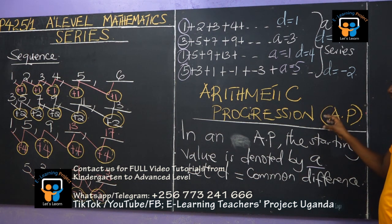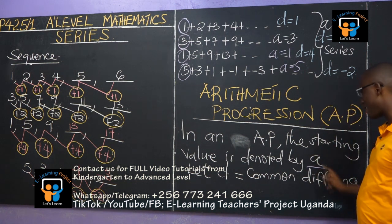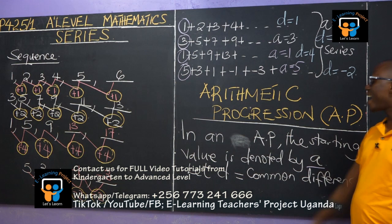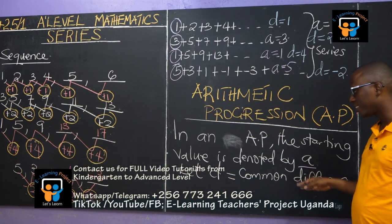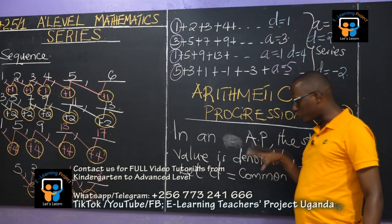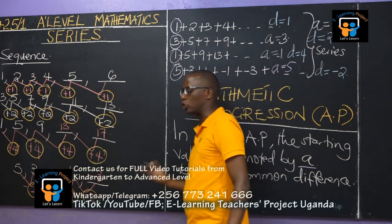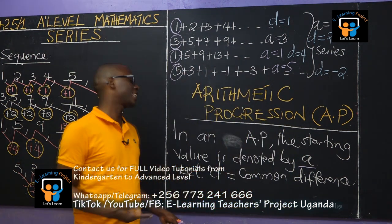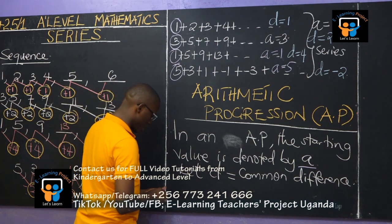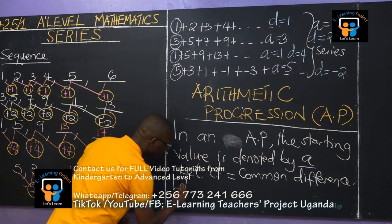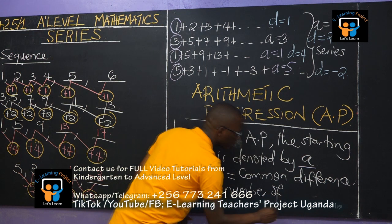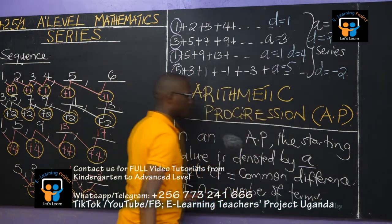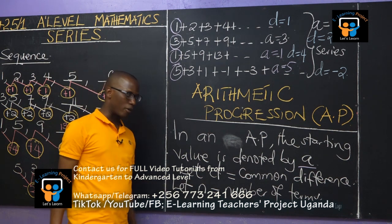We are now introducing the arithmetic progression, and we are looking at the general terms. If A is the first value, or the starting value, and D is the common difference, then we can be in a position to identify the nth term. Let n equal to the number of terms.